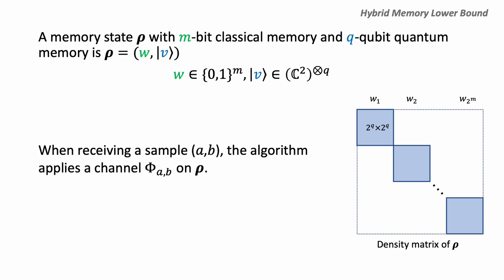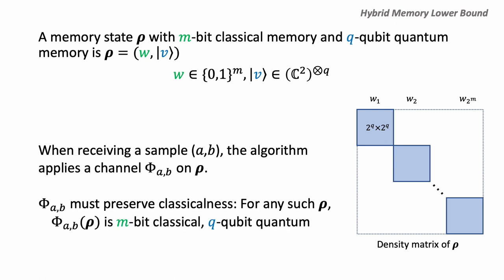By receiving each sample a and b, the learning algorithm applies a channel controlled by the sample — controlled by a and b. It must satisfy that for any m-q-hybrid state rho, the resulting state after applying channel phi_{a,b} is also m-q-hybrid. In other words, this channel must preserve classicalness for the system. Our result holds even if this channel uses a lot of quantum memory and classical memory during its computation, as long as the channel preserves classicalness for the output.